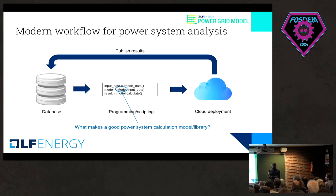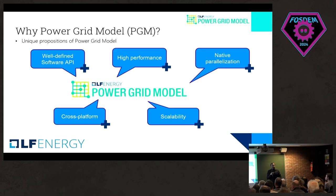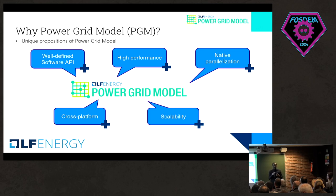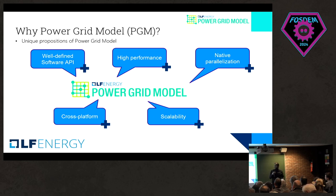So why did we decide to make this, and what makes a good power system analysis library? Around 2018 or so, Alliander faced a problem where we were not able to do this using any of the open source software or the commercial software. We faced these pain points and then decided to make the library focused around them. We needed a well-defined software API, because we want this calculation library to be part of a really bigger application. We also wanted this library to be cross-platform and scalable so that we can use it within the cloud. And since the volume is in millions, high performance and parallelization was needed.